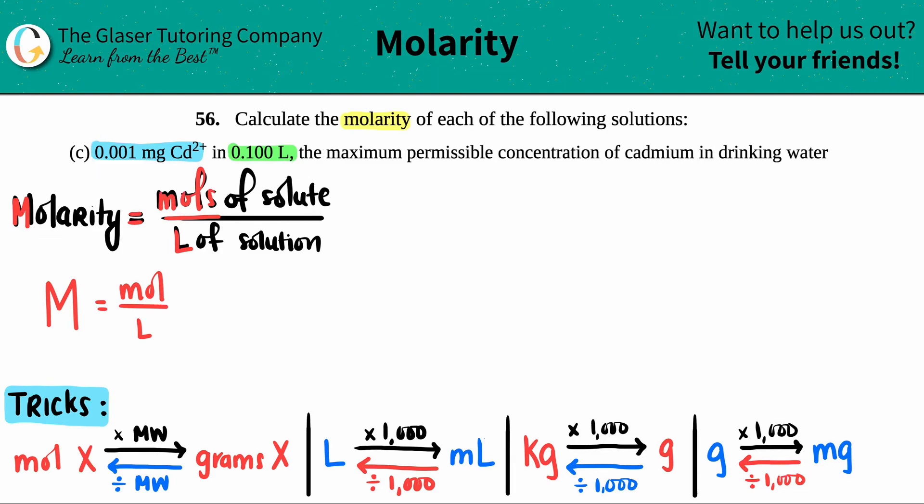Now, from the information that they gave us, do we know any of the information that we need in order to solve for big M or molarity? Well, they didn't give us a mole, right? They gave me a milligram. So can't do anything with that yet, but they did give me a liter. So I know that the bottom number is going to be 0.100 liters. Now I just got to work on the top number. Somehow we have to convert 0.001 milligrams of cadmium ion two plus, and I have to go to moles of cadmium two plus.